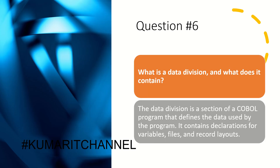Question number six: what is a data division and what does it contain? A data division is a section of a COBOL program that defines the data used by the program. It contains declarations for variables, files, and record layouts. For example, in a tax management project, the data division would contain declarations of variables storing taxpayer information such as name, social security number, and income.